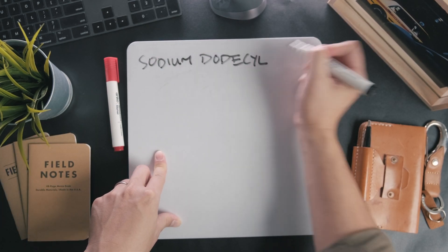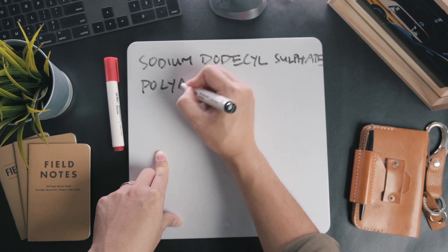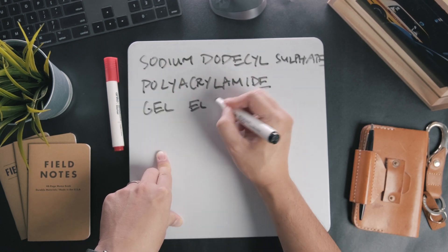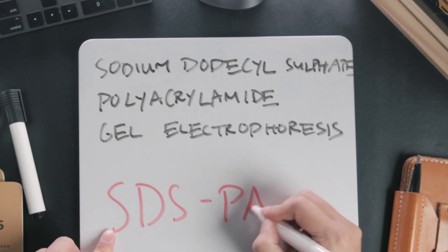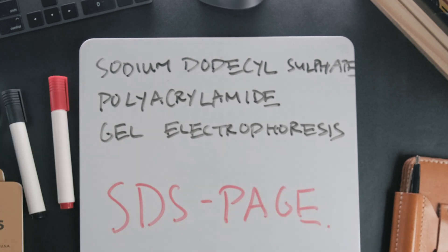SDS-PAGE, or sodium dodecyl sulfate polyacrylamide gel electrophoresis—that's a long name—is a technique used to separate proteins based on their size, also commonly referred to as their molecular weight.